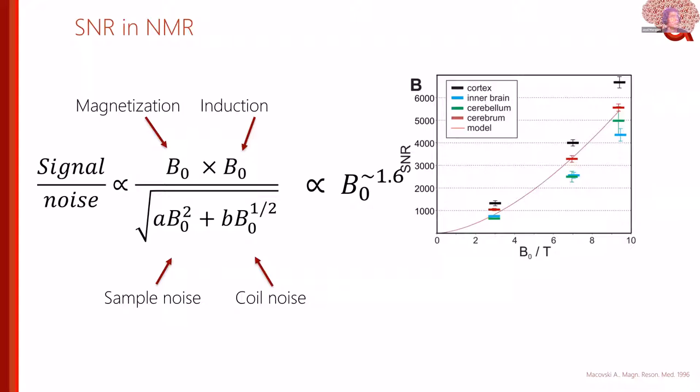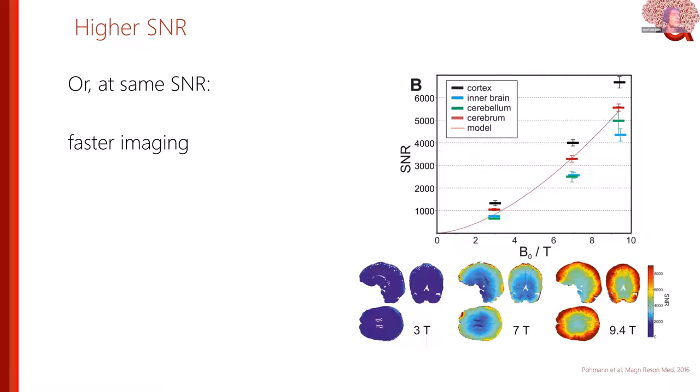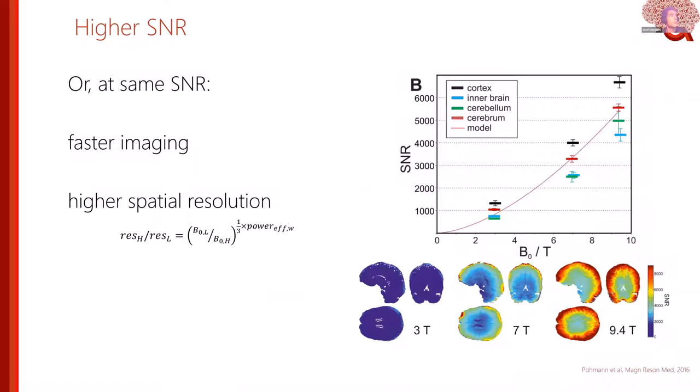You can decide to use the extra SNR gained at high field to either acquire images with higher SNR at the same resolution, acquire images of the same SNR by doing faster imaging, or try more contrasts. Usually what people try is to keep SNR roughly constant and go toward higher spatial resolution. Importantly, it is the volumetric resolution that comes linearly with the SNR increase, not the pixel resolution.